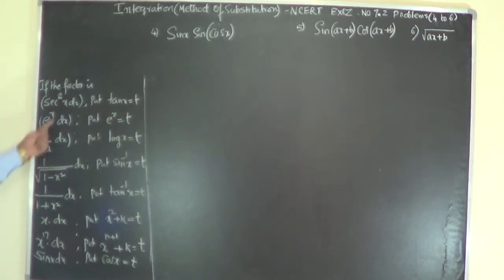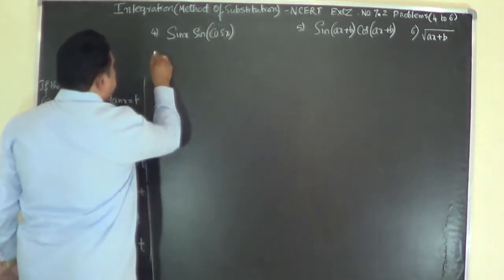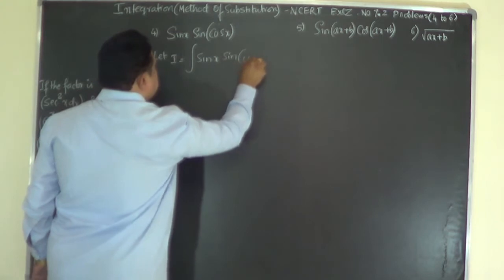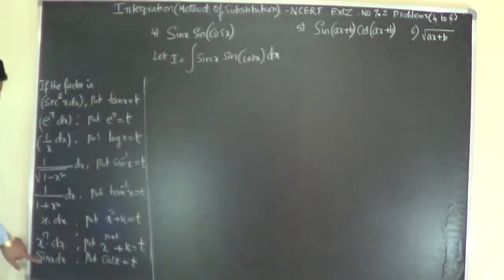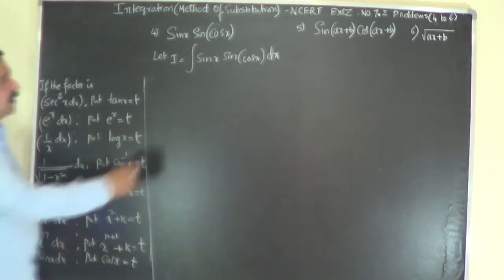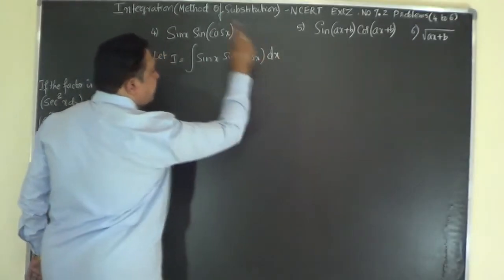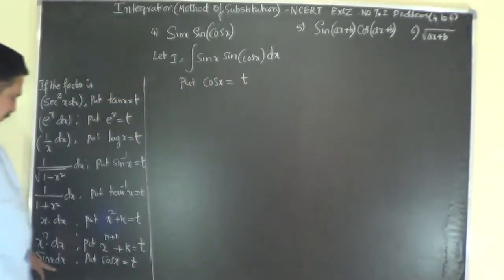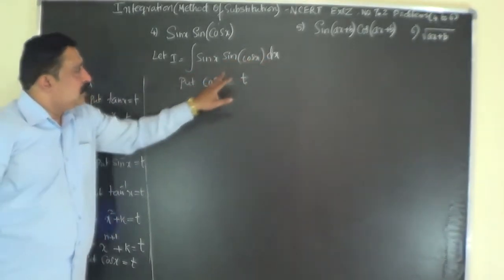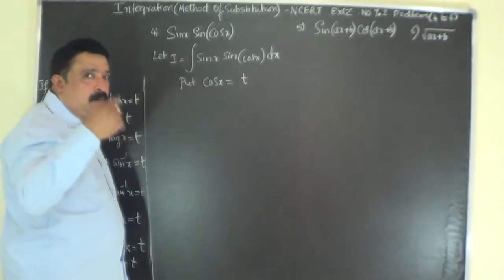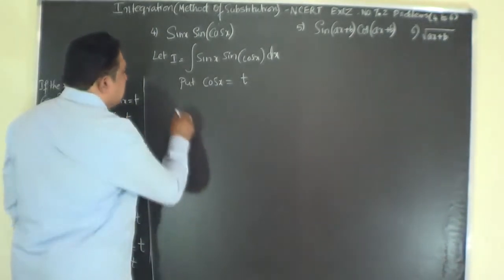Take problem number 4. Let I be equal to the integral of sin(x) · sin(cos x) dx. This list says if the given integrand has sin(x) dx as a factor, then the substitution is to put cos x equals t. Here we have sin(x) dx as a factor, so we put cos x equals t. The cos x component must also be present in the problem for substitution to work.